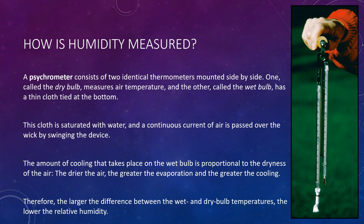By using a psychrometer and the tables in Appendix B of the textbook, you can easily determine the relative humidity and the dew point temperature. In the face-to-face class, students use these devices both inside and outside the classroom to measure humidity, and online students will see a video demonstration.